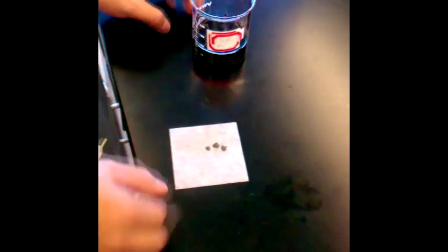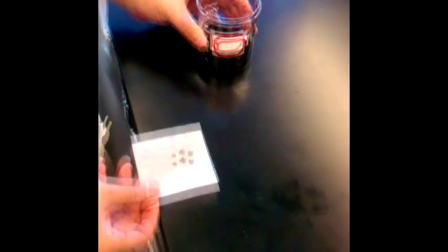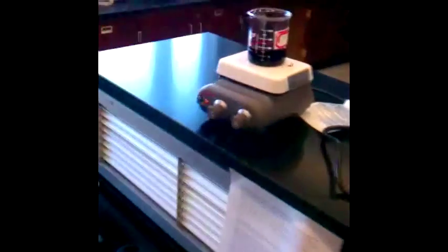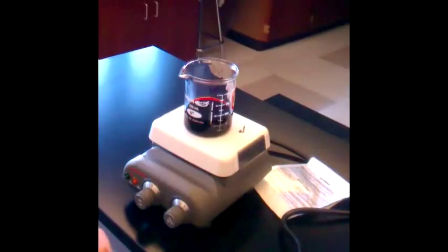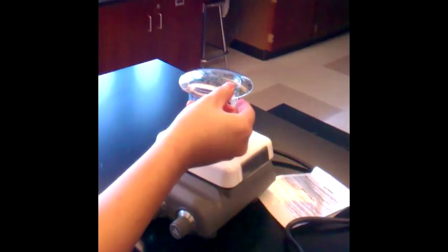We will now add the pre-weighed boiling chips and drop them into the filtrated solution. If you forget to weigh the boiling chips, you will have to remove them at the end of the experiment and weigh the boiling chips separately.